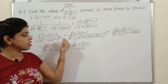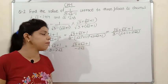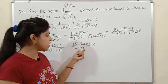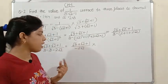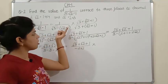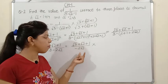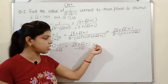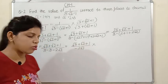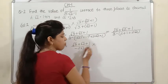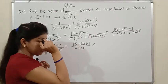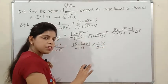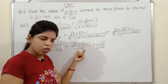After rationalization: numerator is 2√2·√3 + 2√2·√2 + 2√2·1 = 2√6 + 4 + 2√2, and denominator is -8. We can cancel a factor of 2, giving (√6 + 2 + √2)/(-4), which equals -(√6 + 2 + √2)/4. Now the denominator is rational, so the simplification is complete.